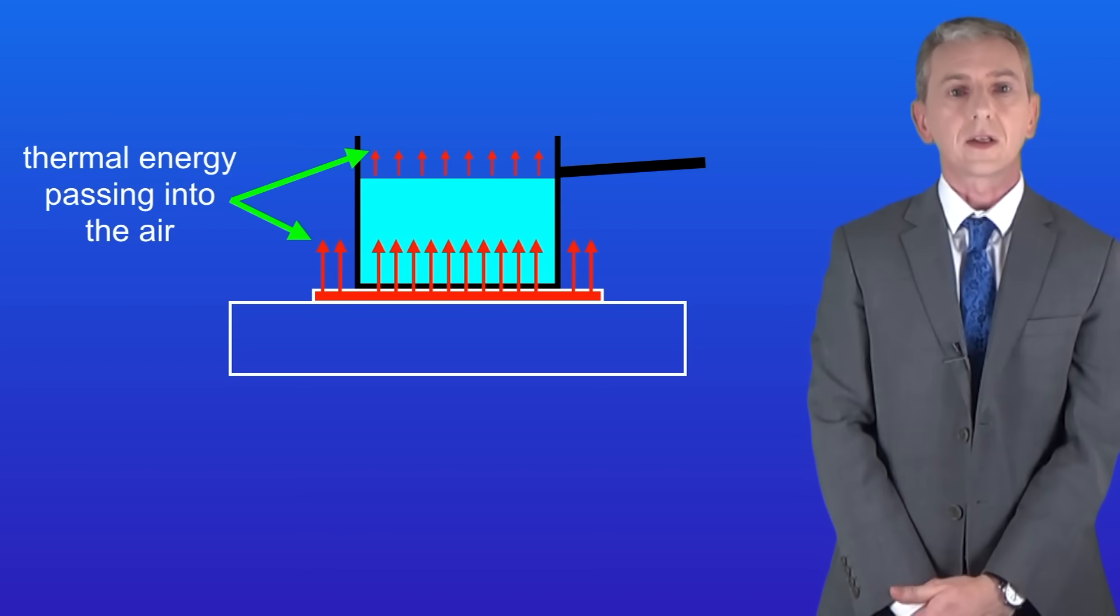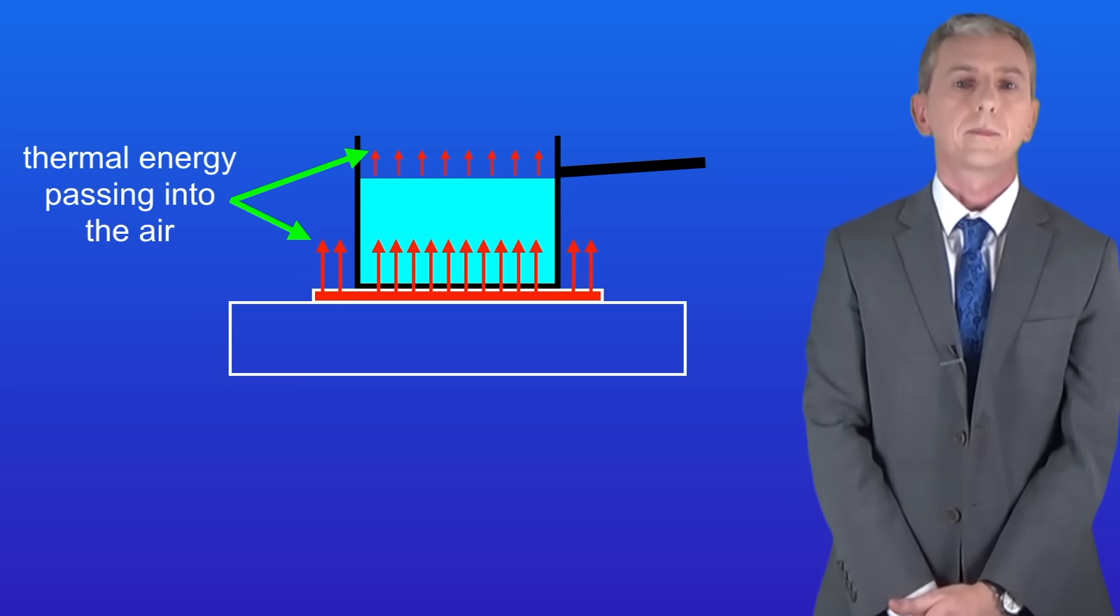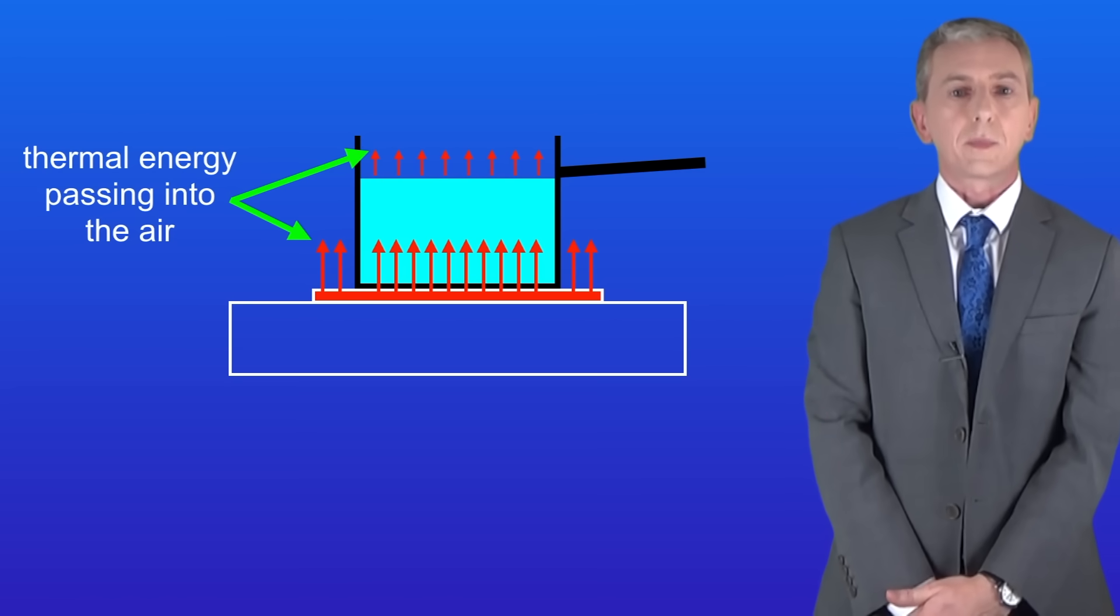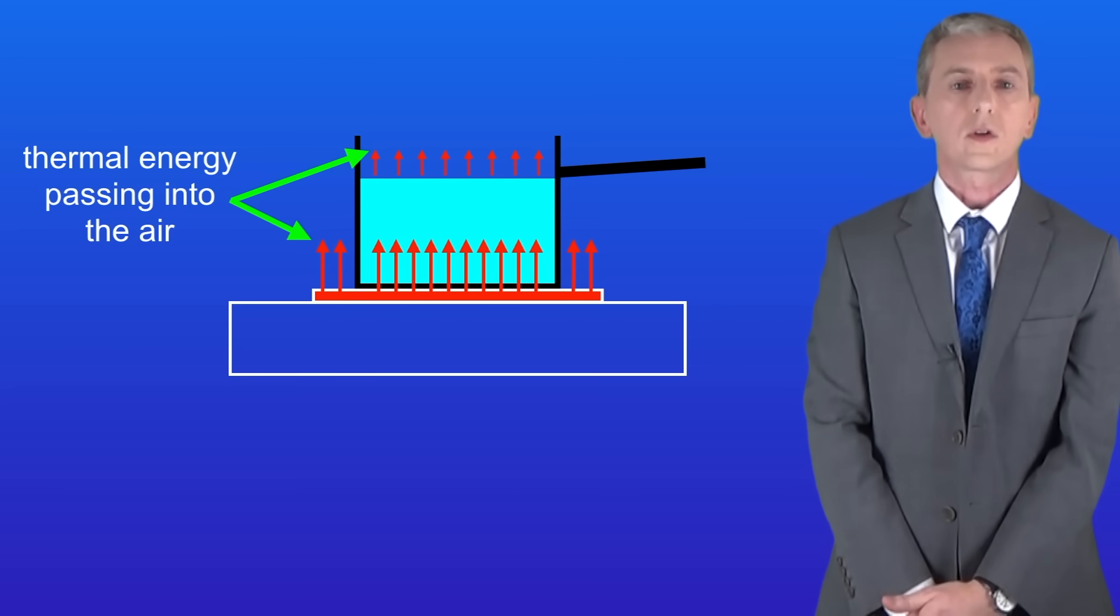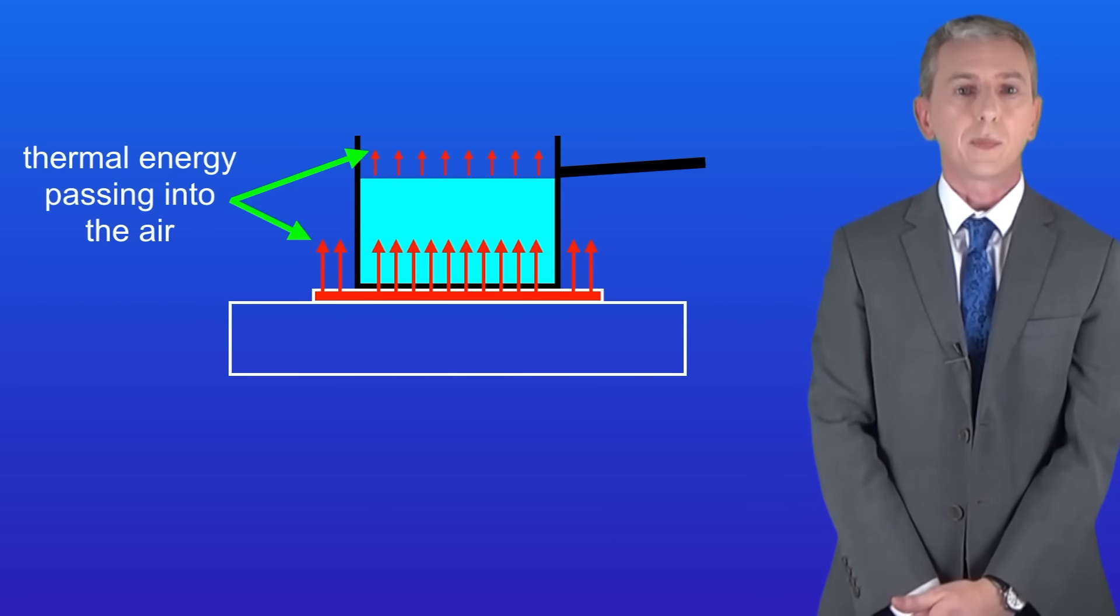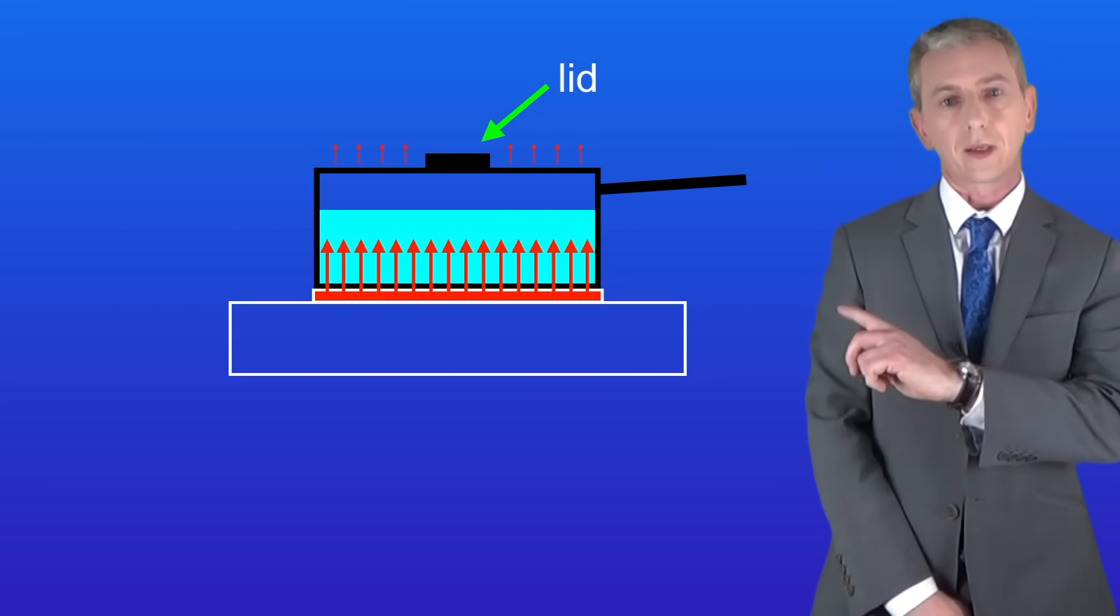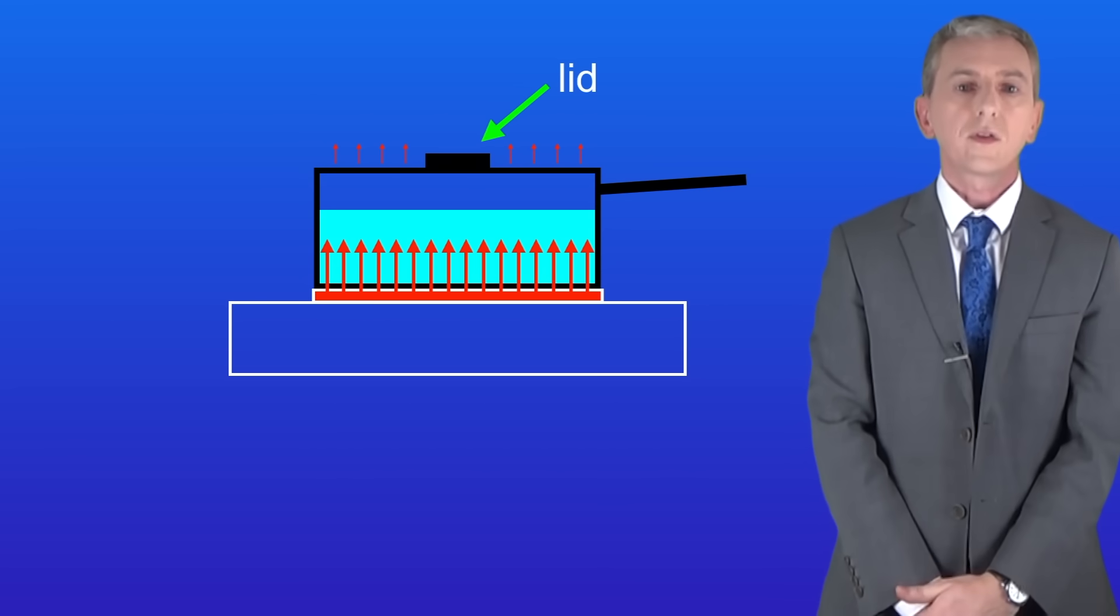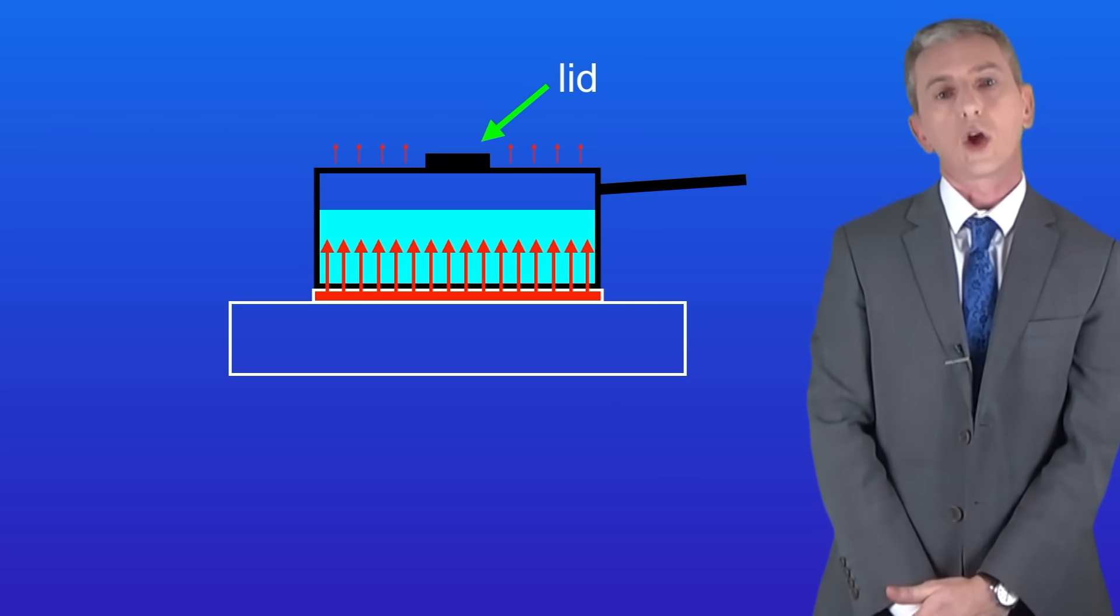However a lot of the thermal energy is wasted. We've got thermal energy passing into the air around the edges of the hob that are not in contact with the pan. We've also got thermal energy passing into the air at the surface of the water. We can reduce both of these by using a pan with a wider base and a lid like this. Both of these reduce unwanted transfer of thermal energy.